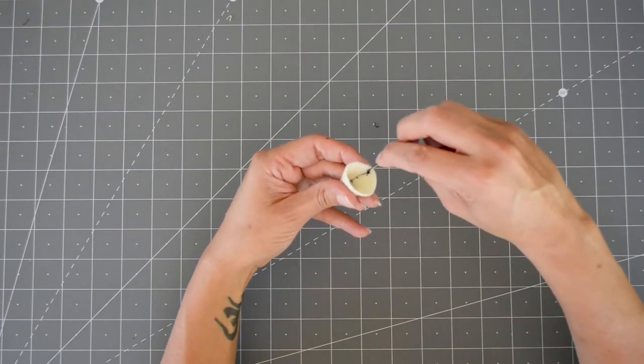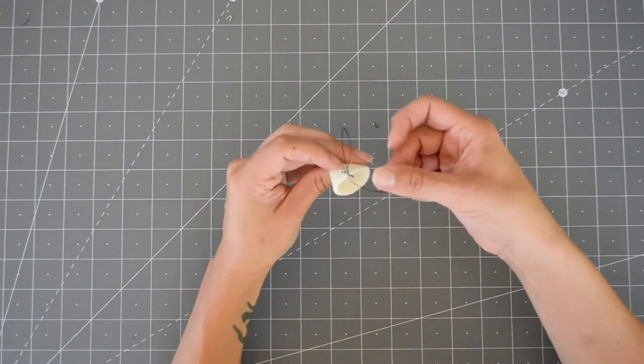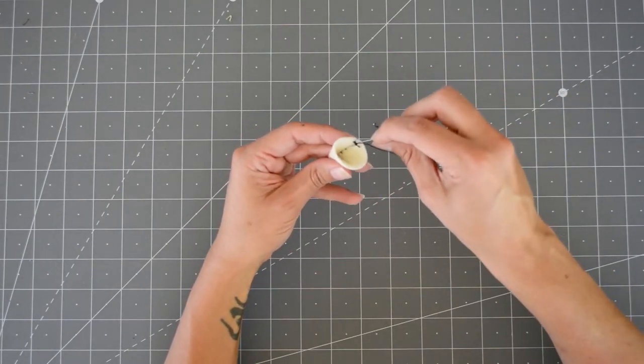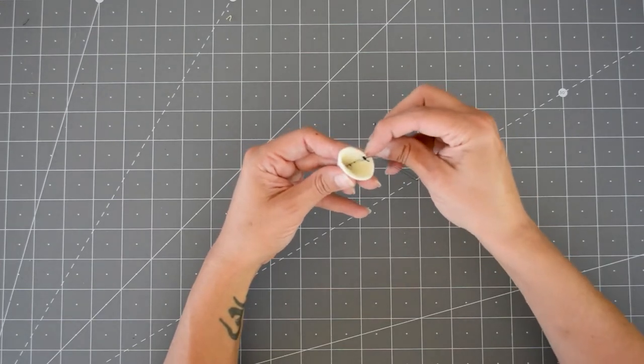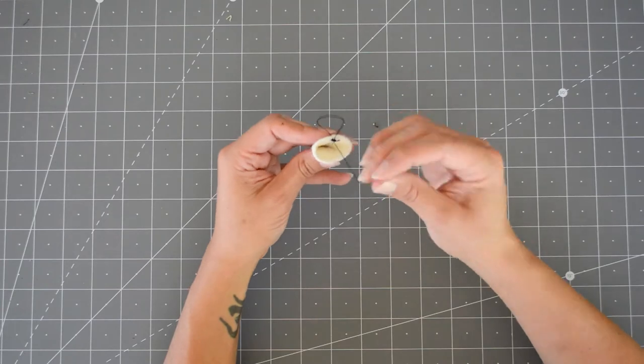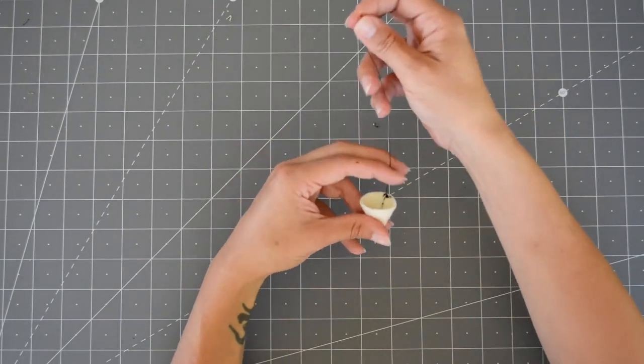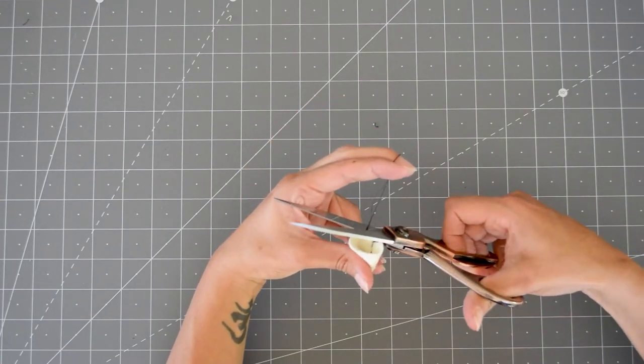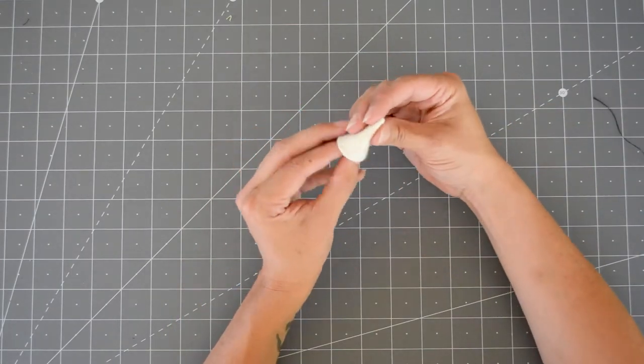So there you go. And then we'll tie this off. I just like to kind of make a knot at the bottom. All of this is going to be hidden, so go ahead and tie that knot however you need to. And then we'll cut this off. And there you go. Alright, there's the hat.